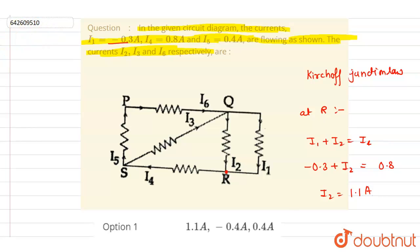So i2 is equal to 1.1 ampere. Now we will move to the next, that is i3. You can see this is the i3.